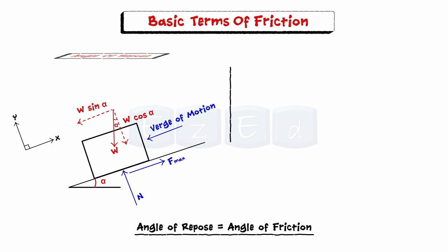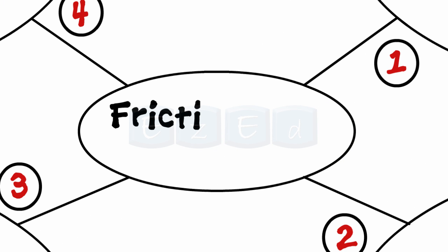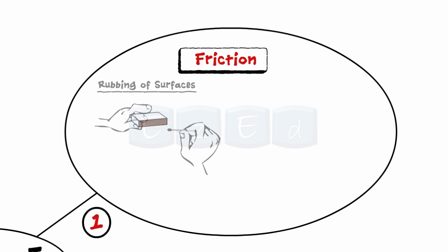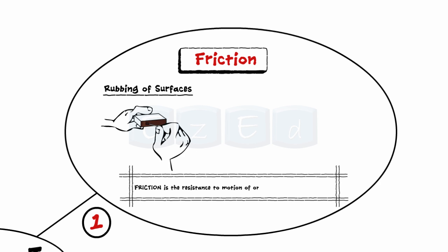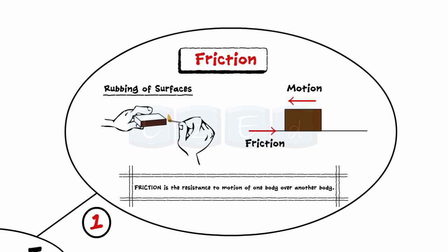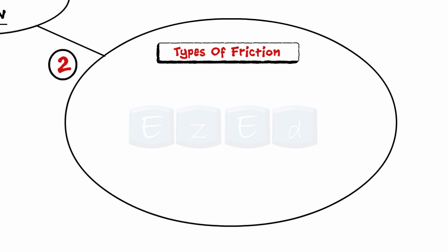Although the angle of repose and angle of friction have the same value, their meanings and applications are completely different. Let's have a quick review of what we have studied in this lecture. Friction is the resistance to motion of one body over another body, and friction force always acts in a direction to oppose motion. Then we learned about the different types of friction.